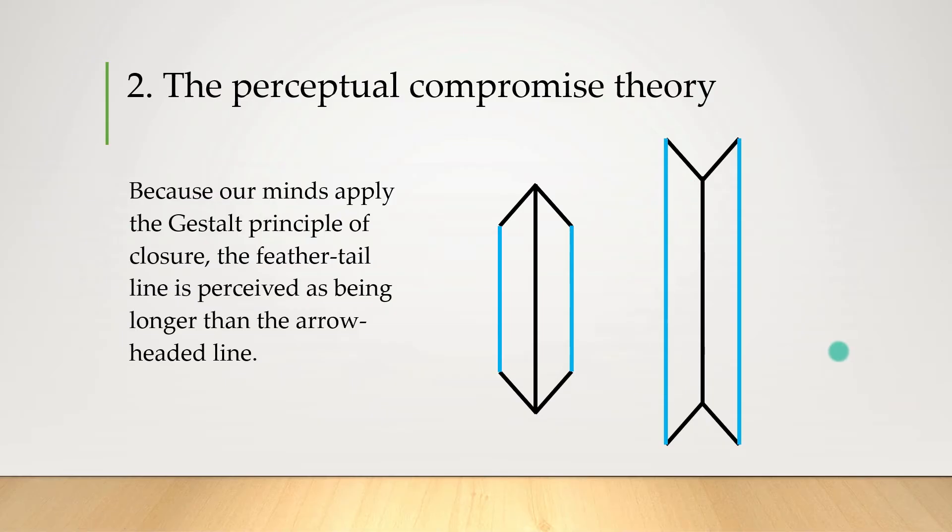Now because of this perceptual compromise made, we perceive each figure to sort of be the length of the average black and blue lines instead of the original, resulting in us thinking that this vertical line has to be longer than this one here.